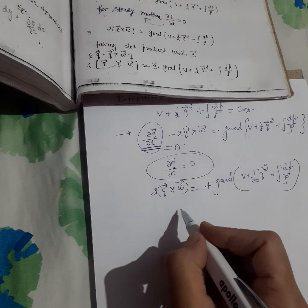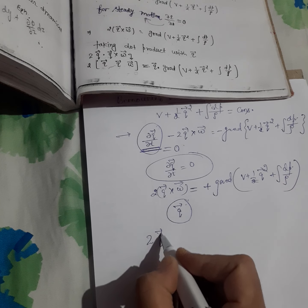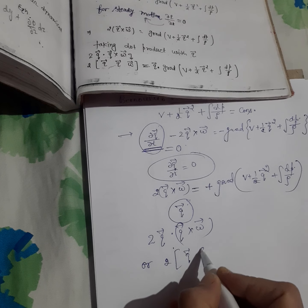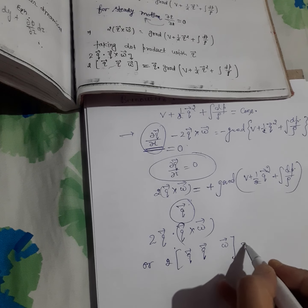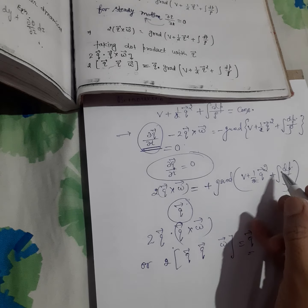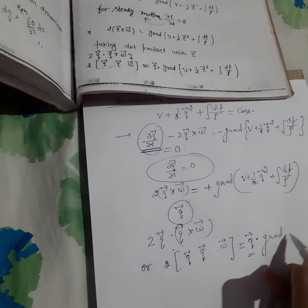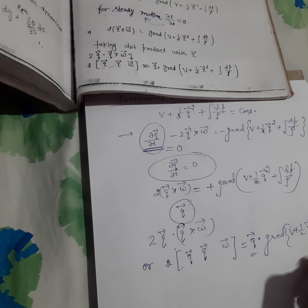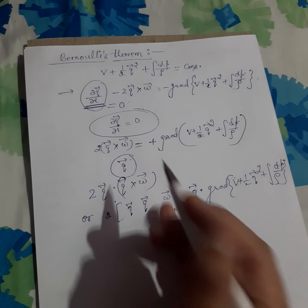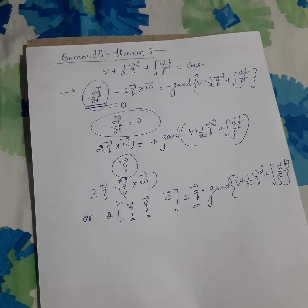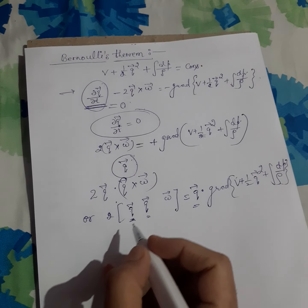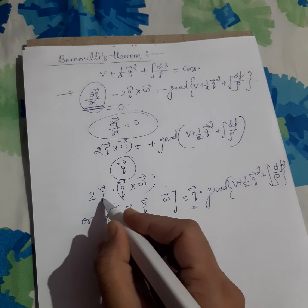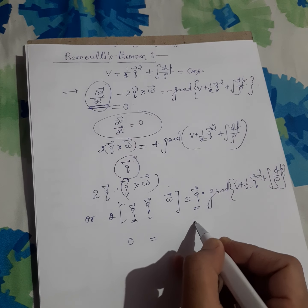Now take the dot product of both sides with q. On the left side, q · (q × ω): since q and q × ω are perpendicular (the cross product of two vectors is perpendicular to both), their dot product equals 0. So: q · (q × ω) = 0. This term vanishes.